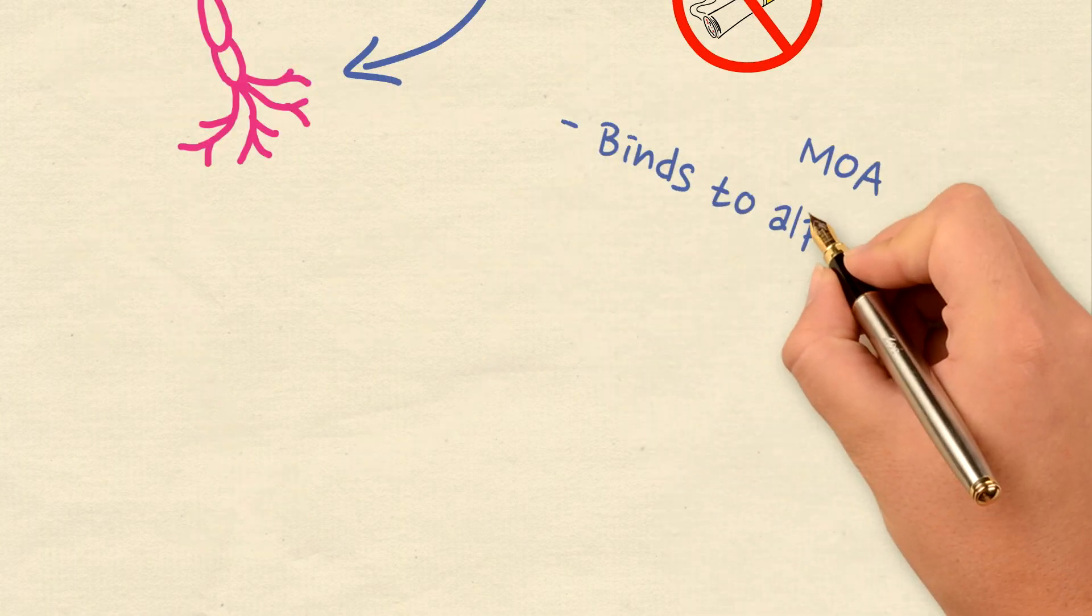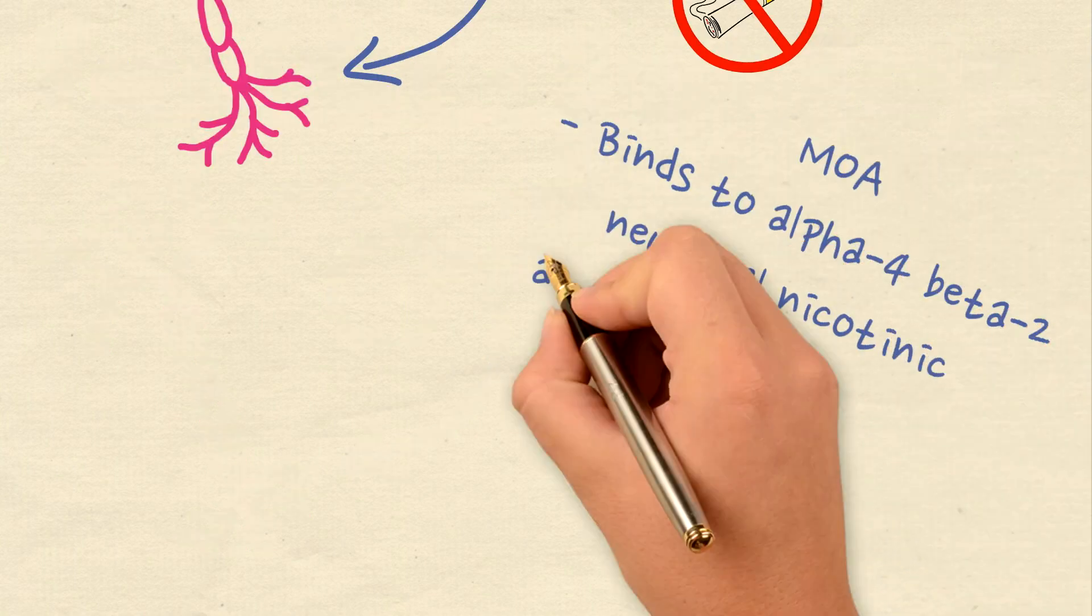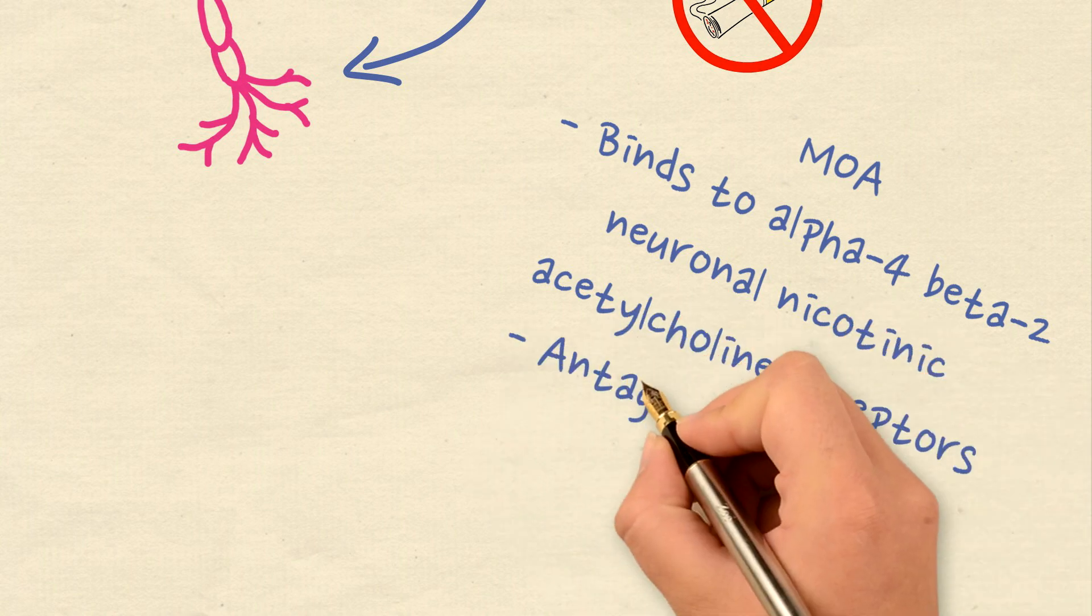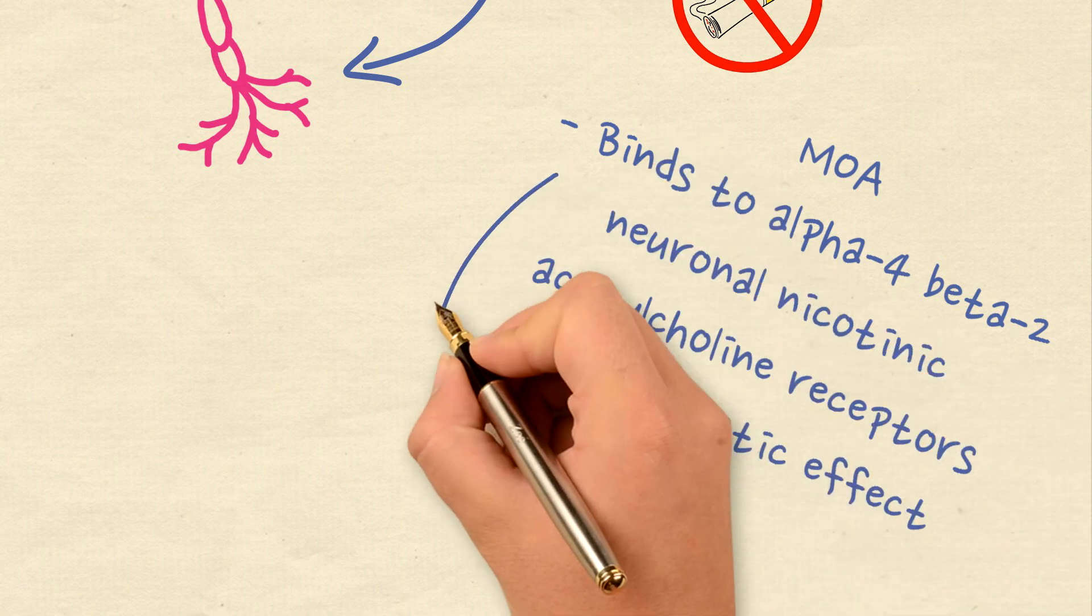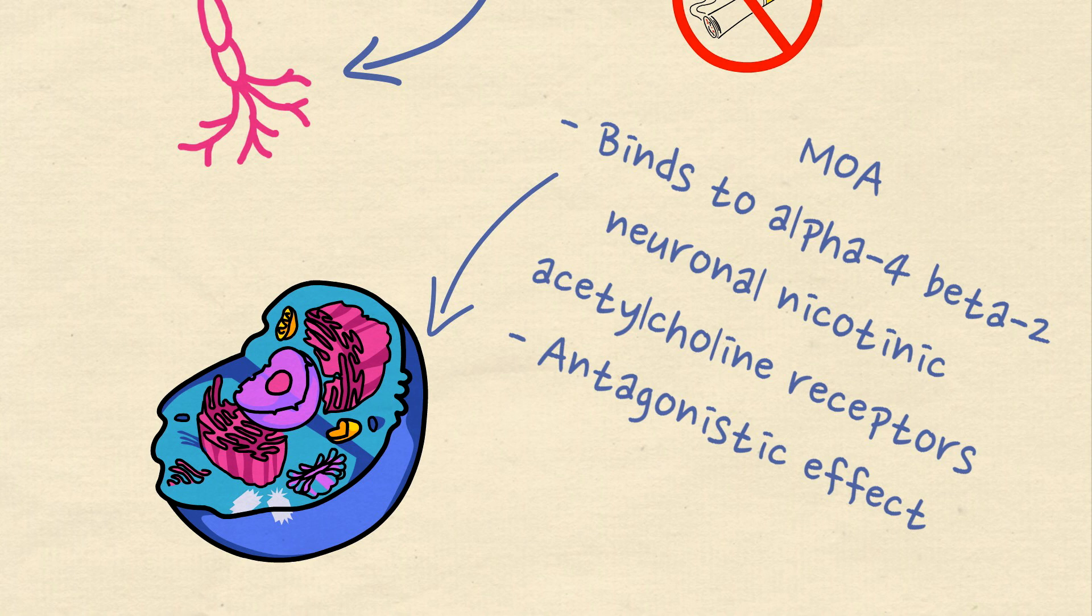So what is the mechanism of action of varenicline? Varenicline binds to alpha-4 beta-2 neuronal nicotinic acetylcholine receptors but with a lower degree of activity than nicotine. It also exerts antagonist effect by preventing nicotine from fully activating the alpha-4 beta-2 receptors.